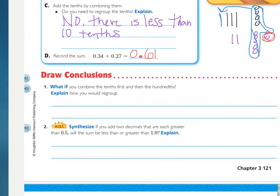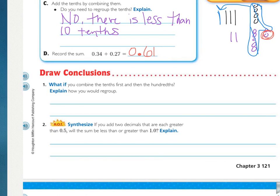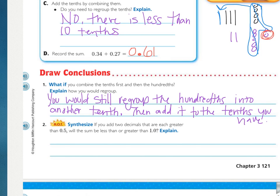So, looking at our draw conclusions, they're asking, what if you combine the tenths first, and then the hundredths? So what if we combined, right here, our tenths first, before we combined all our little hundredths? How would you regroup? Well, you would actually still end up regrouping the hundredths. You would just have to remember to add in that extra tenth. I said that you would still regroup the hundredths into another tenth, then add it to the tenths you have.